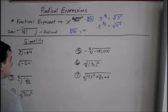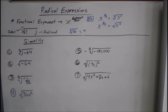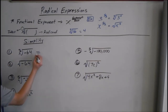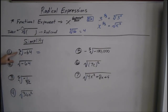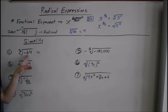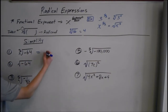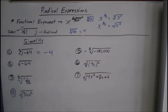A couple of easy examples. Say we have the cube root of negative 64. Whatever the index is, that's how many you need to multiply to equal the radicand. So what times what times what equals negative 64? Well, that's negative 4 times negative 4 times negative 4.